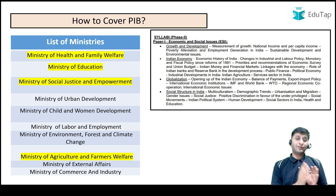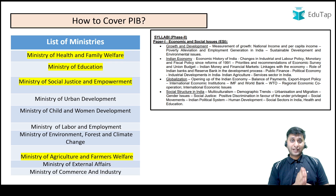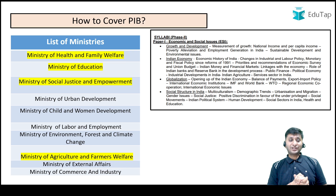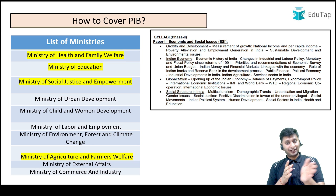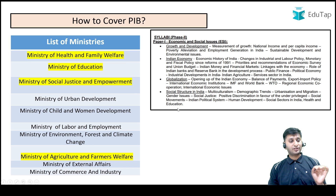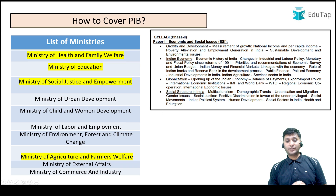First, you need to learn which ministries to target when reading PIB. For Phase 2, we should map the ministries from PIB related to our syllabus of Economic and Social Issues, since most PIB news in Phase 2 is asked under that. The important ministries are: Ministry of Health and Family Welfare, Ministry of Education, Ministry of Social Justice and Empowerment, Ministry of Urban Development, Ministry of Child and Women Development, and Ministry of Labour and Employment.